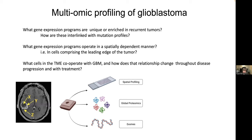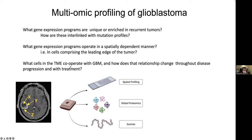The hope of this approach is to answer specific questions about tumor cell biology, evolution, and response to treatment. We want to know what gene expression programs are unique or enriched in recurrences, how expression programs are interlinked with mutation profiles, what gene expression programs operate in a spatially dependent manner — for instance, what operates in the leading edge where cells are actively invading — and what cells in the tumor microenvironment cooperate with GBM cells and how that relationship changes throughout disease progression and with treatment.